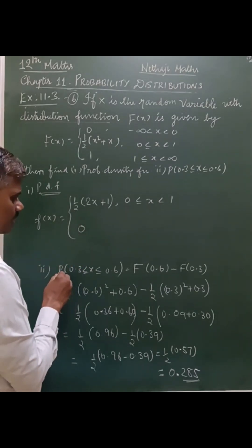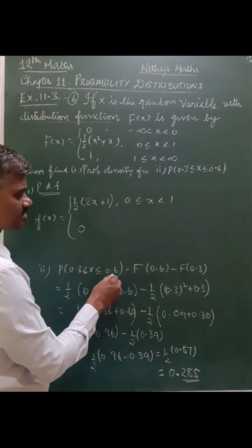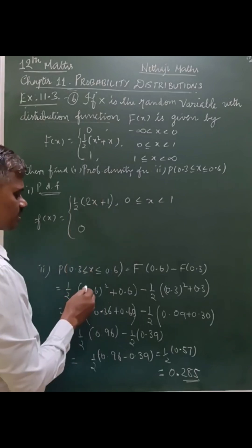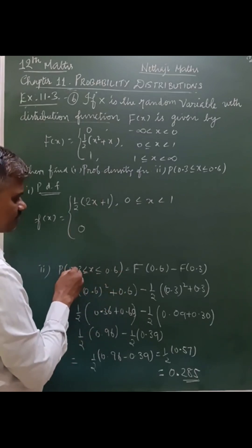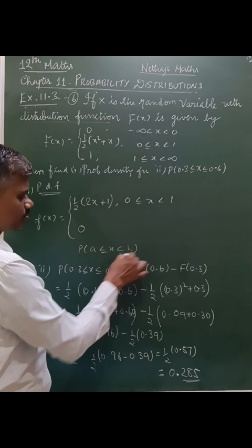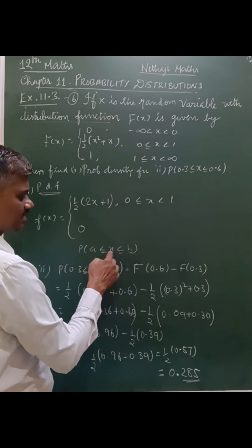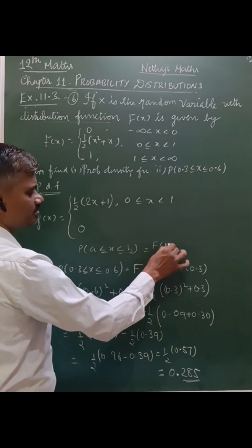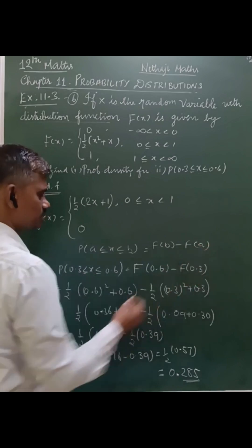Now here we have to find the probability between 0.3 to 0.6. To use capital F(x), the formula is F(b) minus F(a). The probability of x lies between a to b is F(b) minus F(a). That is the formula.